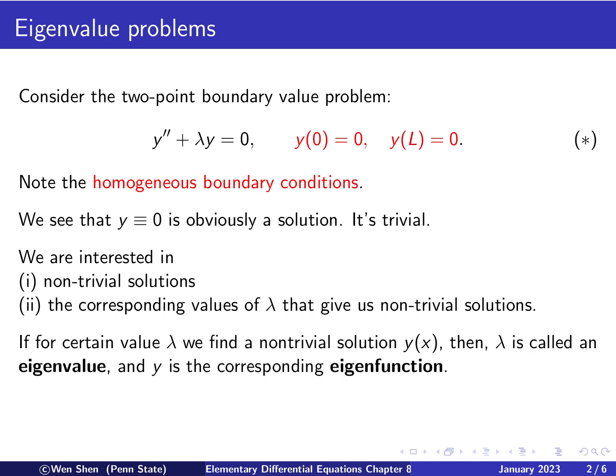So now if for a certain value lambda, we find a certain non-trivial solution y, then this lambda is called an eigenvalue, and the function y, the solution, will be called the corresponding eigenfunction. So we just want you to flashback to what we have learned of eigenvalue and eigenvector for a square matrix. There are some similarities in these two definitions.